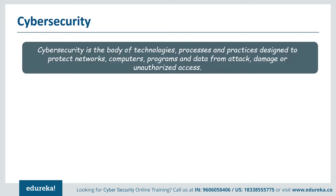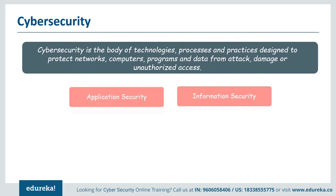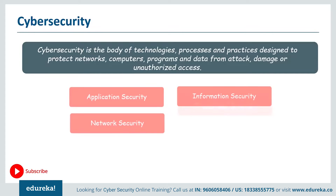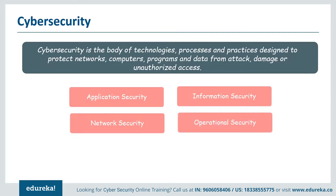Ensuring cyber security requires the coordination of efforts throughout an information system. This includes application security, which mainly focuses on keeping software and devices free from cyber threats. Then there is information security, which is basically protecting the integrity and privacy of data, protecting organizations from possible data breaches. And then there is network security, which is the practice of securing a computer network from intruders, whether targeted attackers or simple malware. There is also operational security, which includes all the processes for handling and protecting data assets, the permissions users have when accessing a network, and the procedures that determine how and where data must be stored and shared.